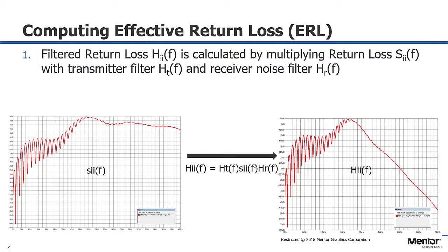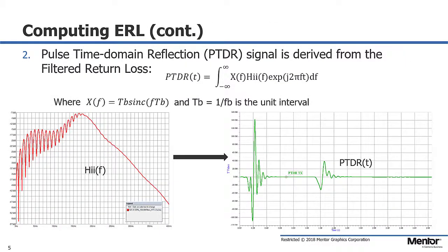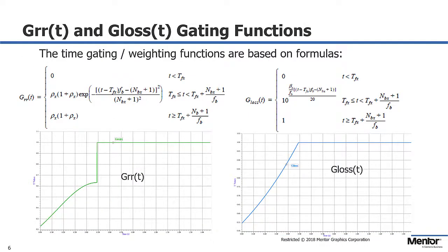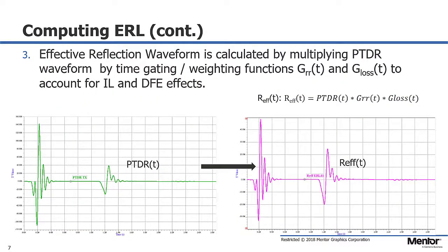Effective return loss is calculated through a multiple-step process. First, the return loss for the channel is combined with filtering functions for the transmitter and receiver. Then that is used to calculate a pulse response for the reflection. Then gating functions are calculated that will be used to scale the reflected pulse response. And those gating functions are then used to scale that pulse response, resulting in the effective reflection waveform.